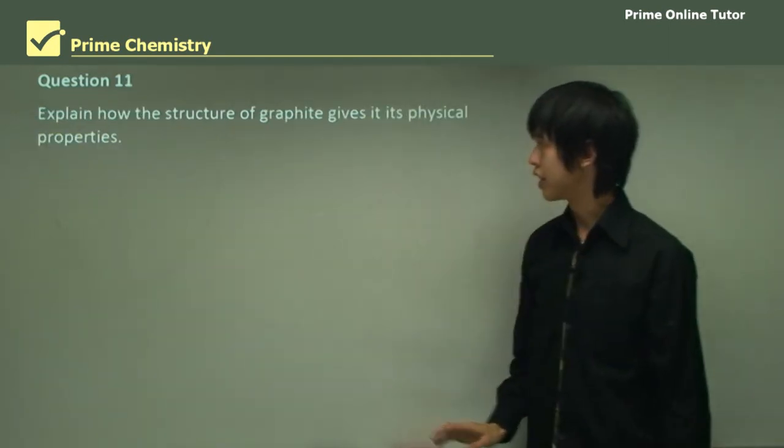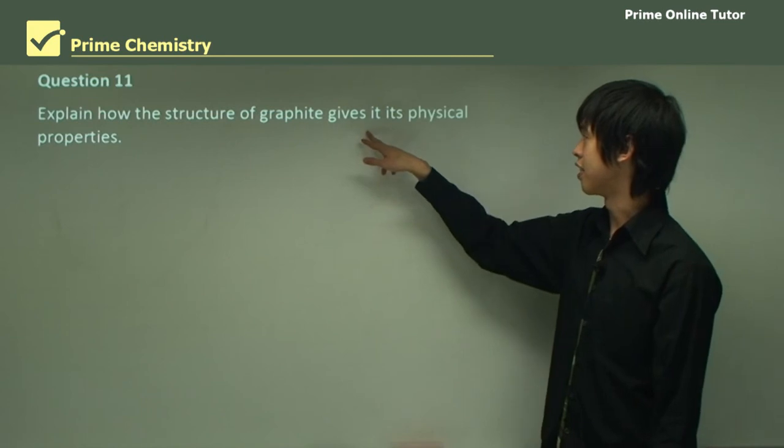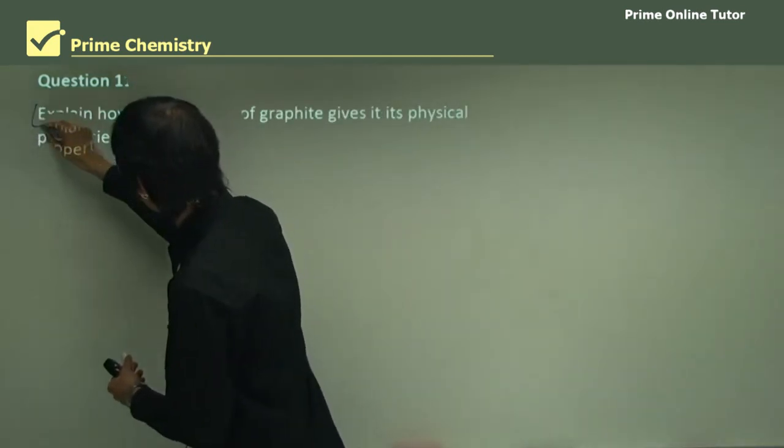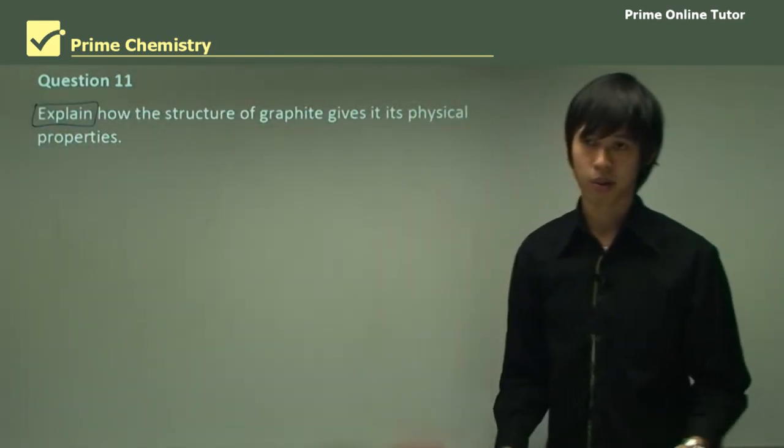The last question is, explain how the structure of graphite gives it its physical properties. We look at explain, and it's cause and effect, remember, always cause and effect.